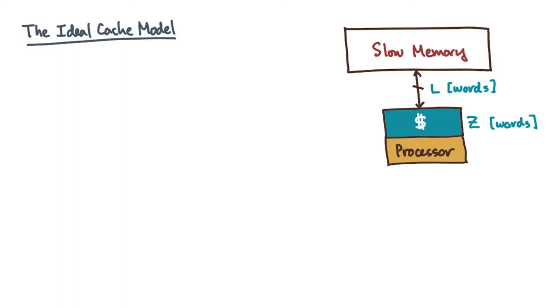To analyze a cache oblivious algorithm, we're going to need a model of how a cache works. Here's the model I want you to assume, which we sometimes call the ideal cache model.